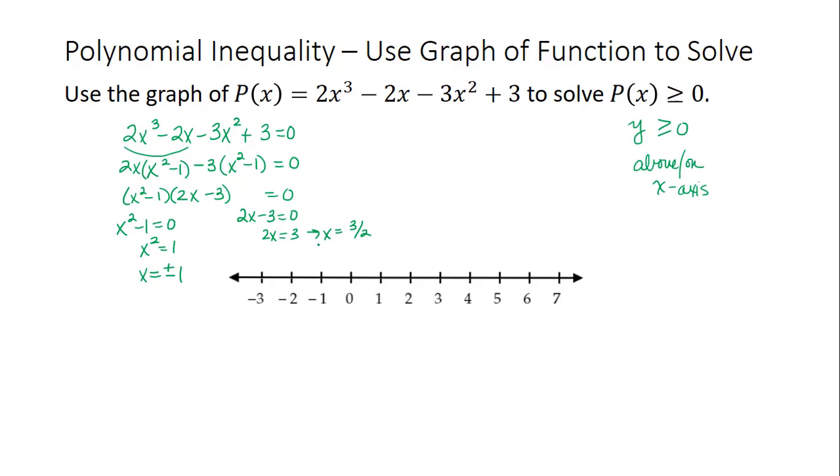So 1, -1, and 3/2 are the zeros of this function. I'm going to plot those on the number line, thinking of it as the x-axis. Remember we're thinking about the graph of this polynomial function. These values of 1, -1, and 3/2 are where the graph would hit, touch, or cross the x-axis.